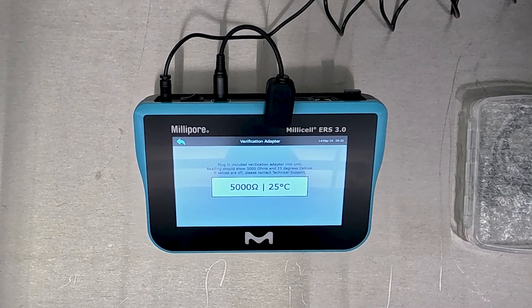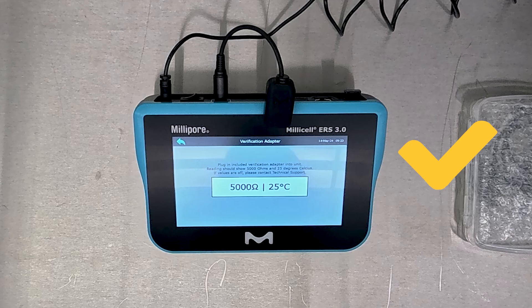Your instrument is taking measurements properly if it reads 5000 ohms and 25 Celsius.